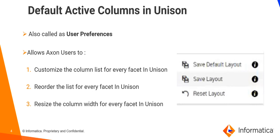This feature, also called user preferences, allows Axon users to customize the column list for every facet in unison, to reorder the list for every facet in unison, and to resize the column width for every facet in unison.